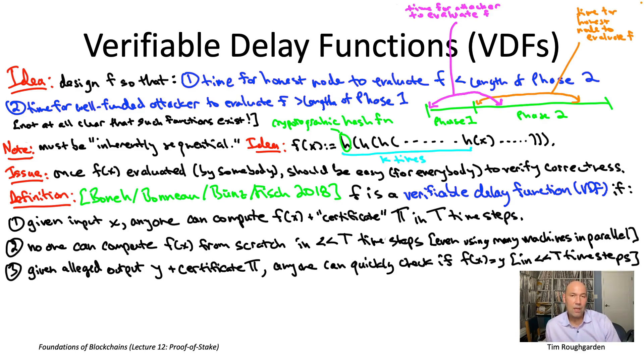So I give you a VDF satisfying one through three, how would you come up with one that in addition is basically as random as your cryptographic hash function.